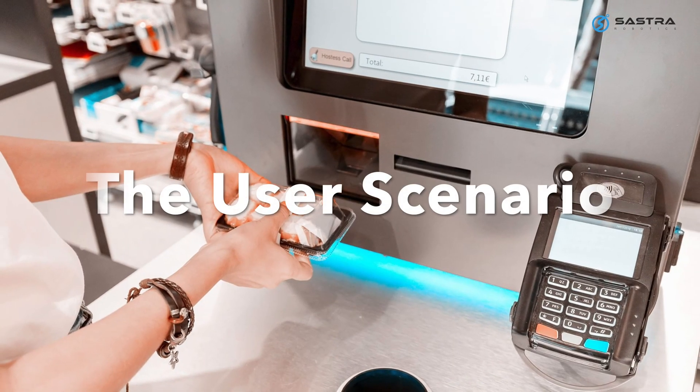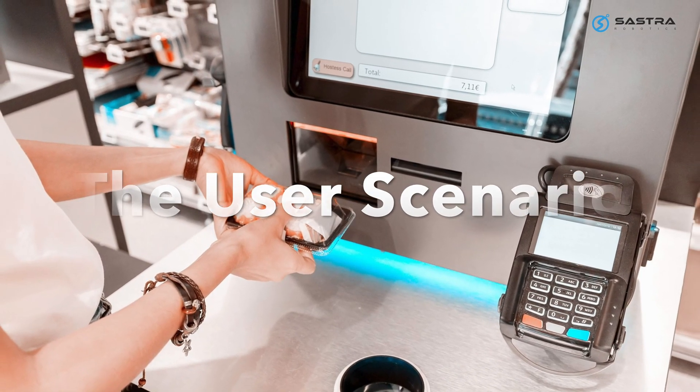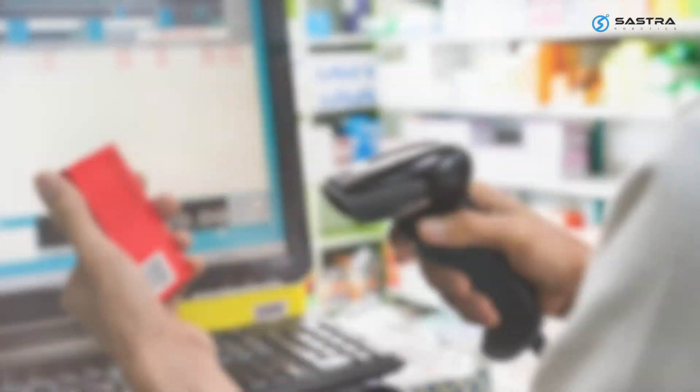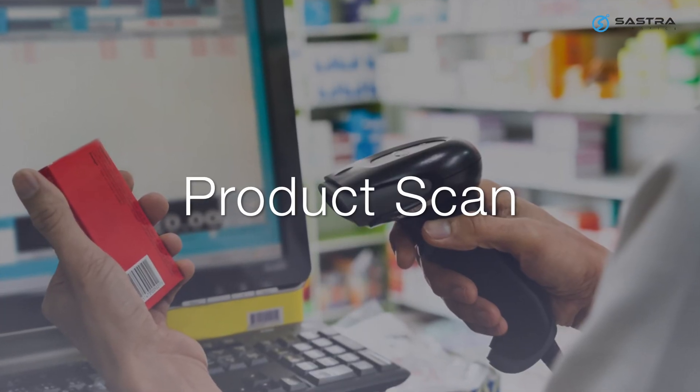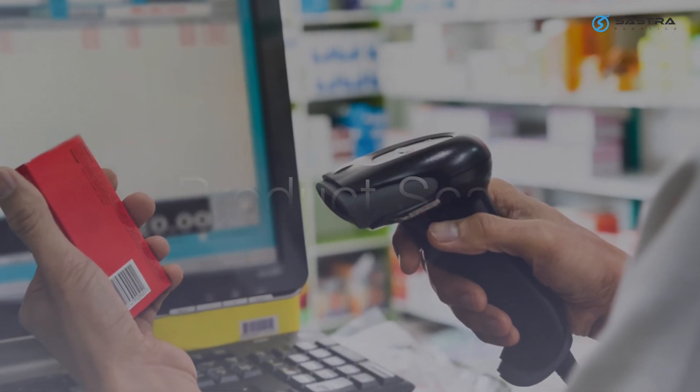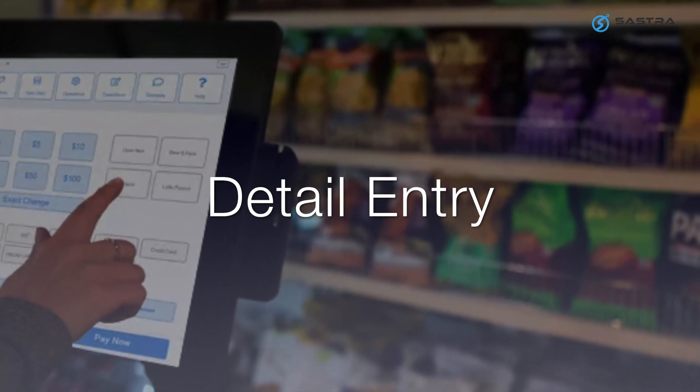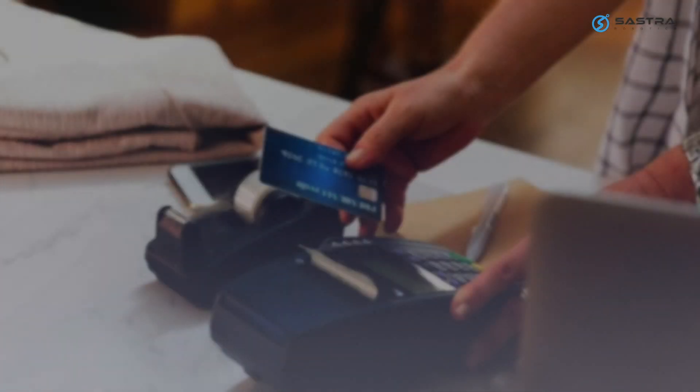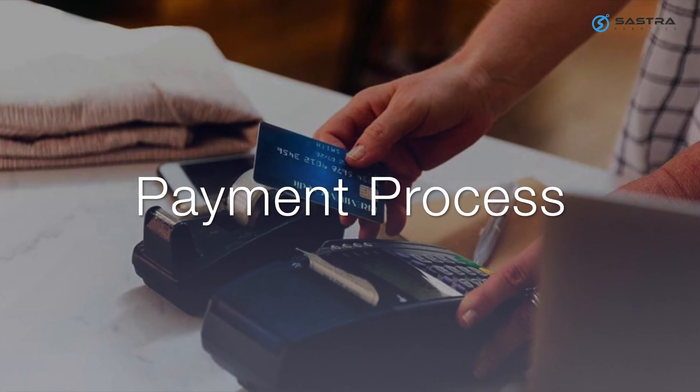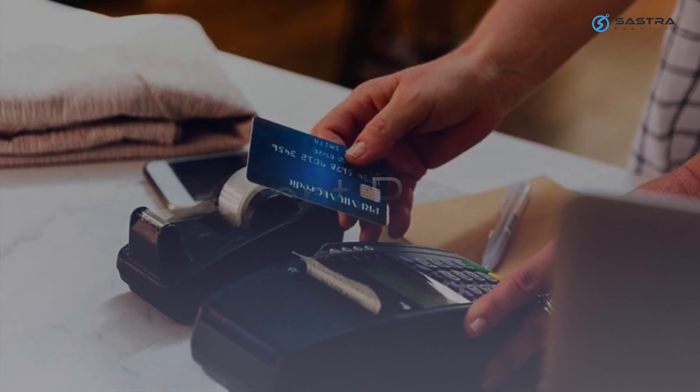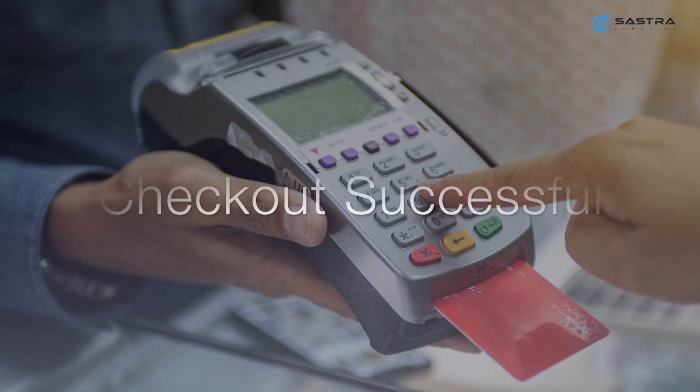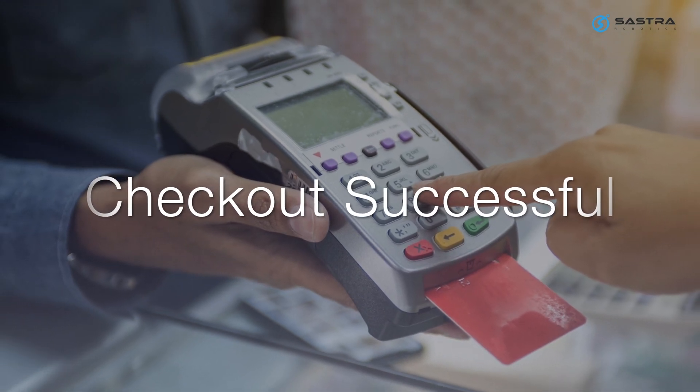A real user scenario at a checkout counter of a retail store has multiple steps. The process starts with the store executive scanning the products with a barcode scanner, then entering the product details using the keyboard or touch screen. Once finished, he or she will confirm the payment mode and enter the amount in the payment terminal. The customer then enters the PIN and the transaction is completed.